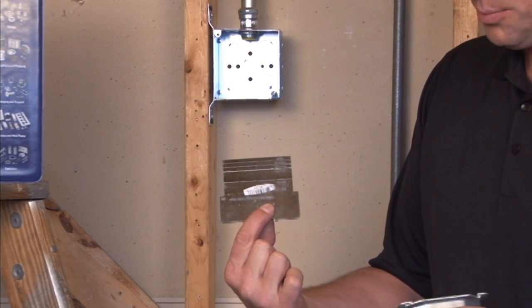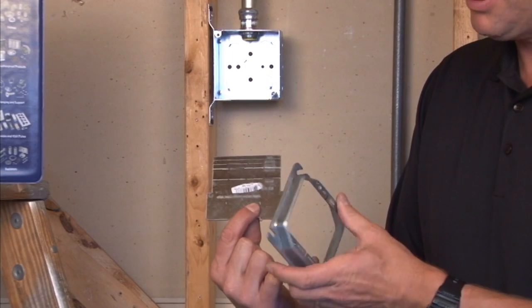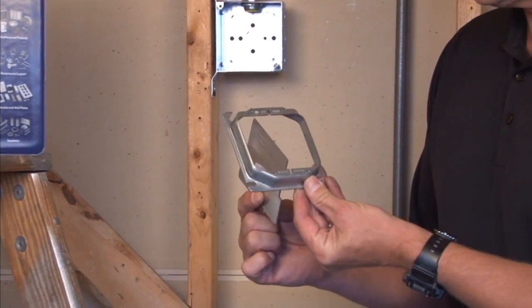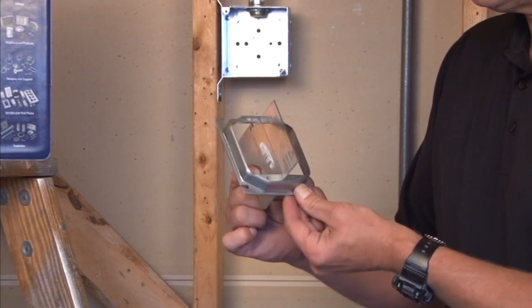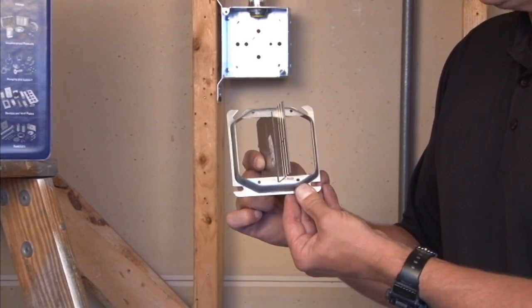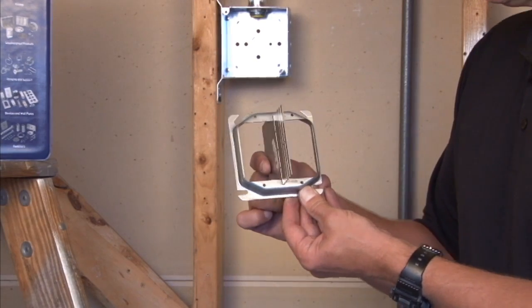The easiest way to install this product is to take your two gang plaster ring and slide the partition through the slot prior to installing the ring on the box.